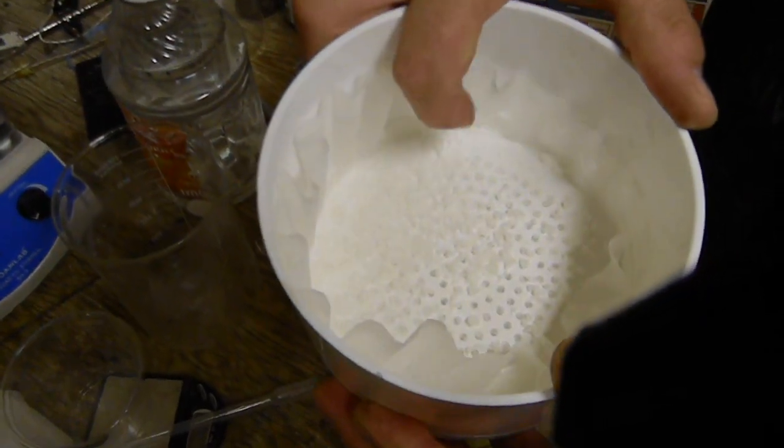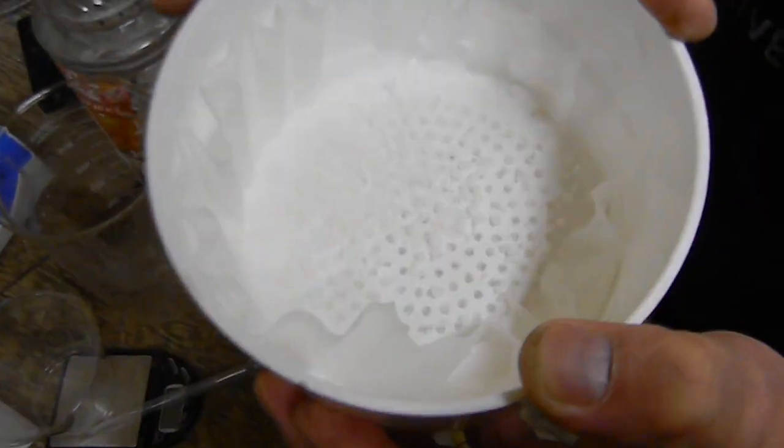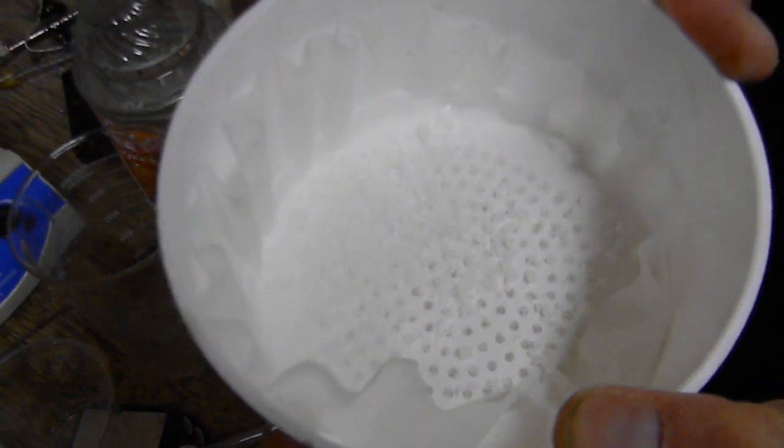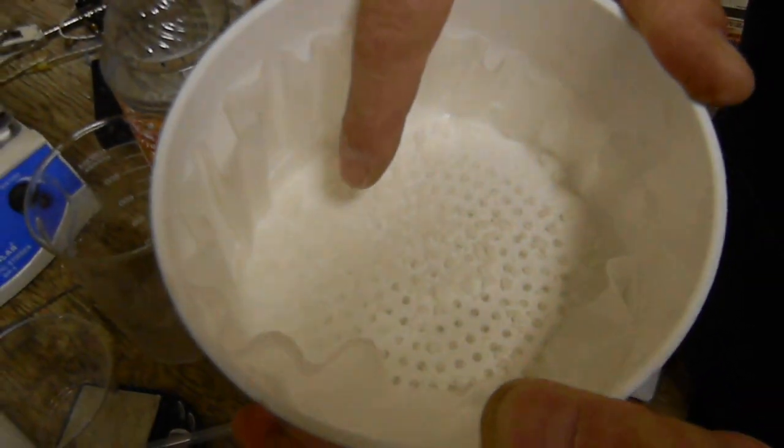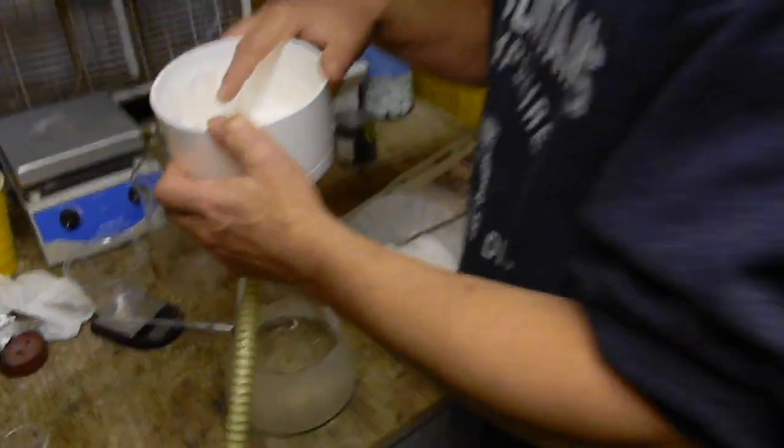See how much coarser, how much bigger the crystals are. I don't know if you can see that at all. But that's what it ends up like. That is recrystallized and if you wanted to, you could store that or do melt cast with it.